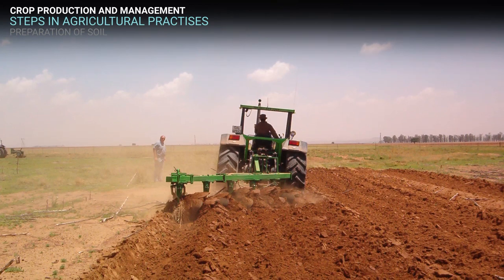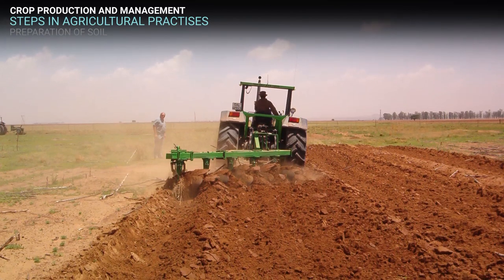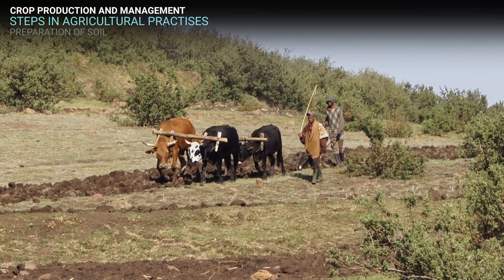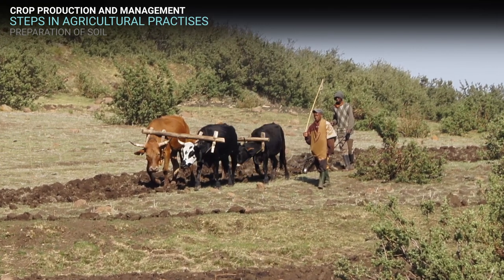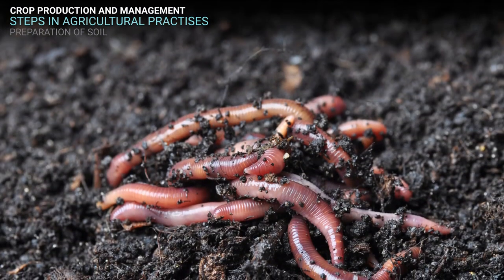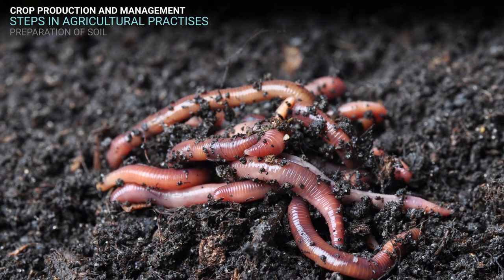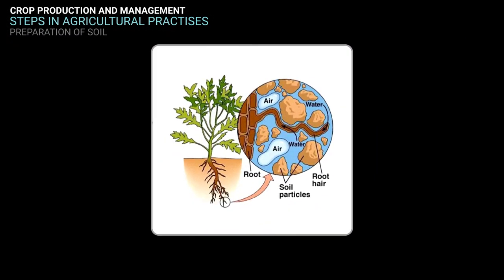Preparation of soil is the first and most important step before growing any crop. It is very important to turn the soil and loosen it. This allows the roots to penetrate deep into the soil. The loosened soil helps in the growth of earthworms and microbes present in the soil. These microbes further turn and loosen the soil and add humus to it. Soil contains minerals, water, air, and some living organisms.